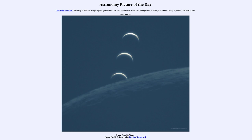Now, we don't generally call that an occultation, although it's the same type of process happening here. The Moon going in front of the Sun we call an eclipse, and there will be an annular eclipse of the Sun — a ring of fire eclipse — where the Moon will pass in front of the Sun, but will not be quite large enough to block out the entirety of the Sun.